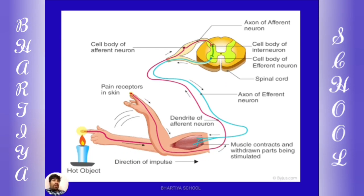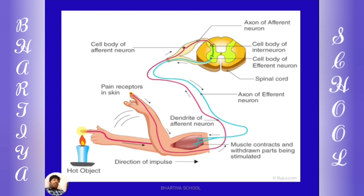यहाँ हम detail में discuss करते हैं कि reflex action कैसे work करता है। मान लीजिए कोई hot object है, जब हमने उसे अपनी finger से touch किया तो skin पर receptors present होते हैं। वो receptors impulse को travel करते हैं, और afferent neuron की help से message travel होके central nervous system यानि spinal cord के पास पहुँचता है।